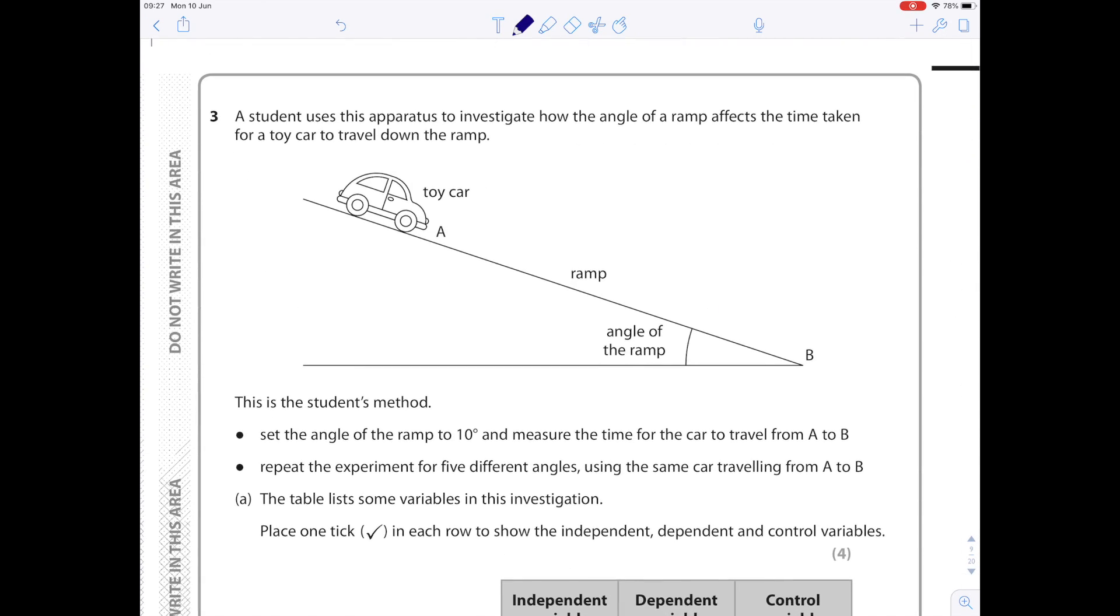Question three: A student uses this apparatus to investigate how the angle of a ramp affects the time taken for a toy car to move down the ramp. Angle of ramp is therefore the independent variable, which is what we're changing. I always like to label things. We're measuring the time, so that means it's the dependent variable.